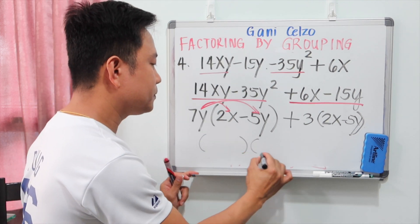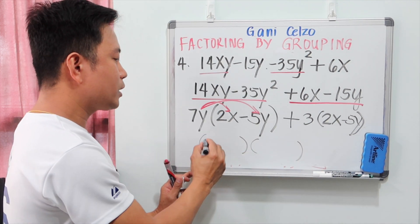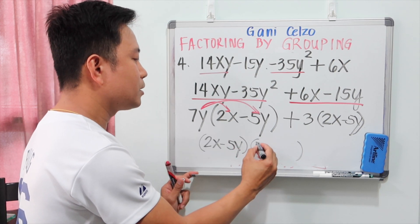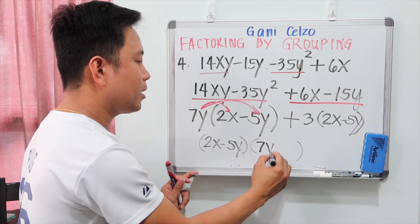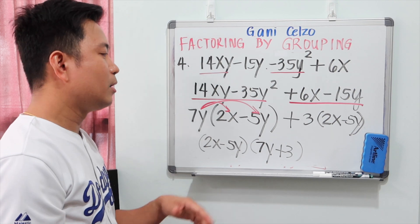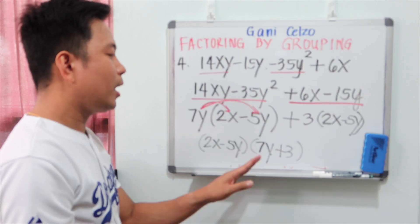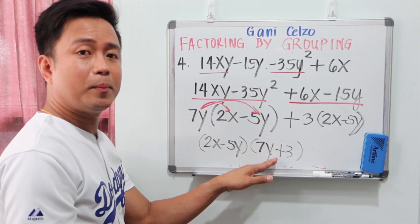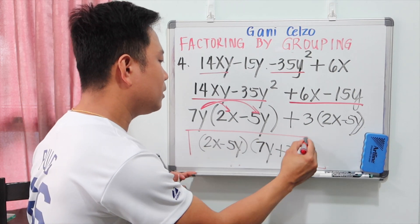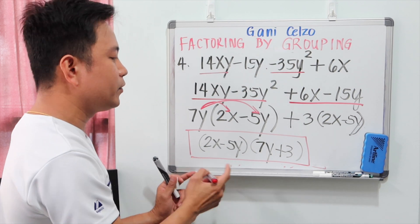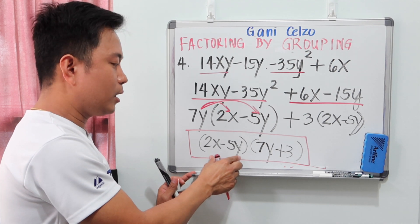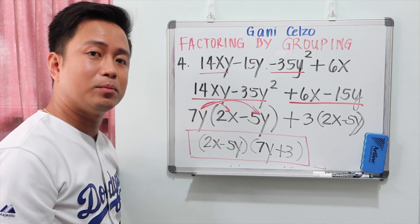The final answer is (2x minus 5y)(7y plus 3), since 2x minus 5y is the common factor for each group and the outside terms are 7y plus 3. You can also rewrite the answer the other way since multiplication is commutative: (7y plus 3)(2x minus 5y).